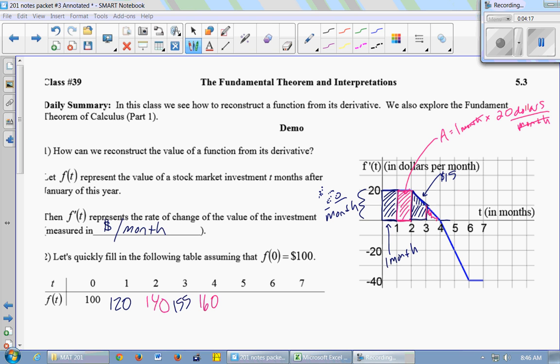Month 4 to month 5, what happened to my investment? Decreased by 10, because this is a triangle, so to find the area of that, it would be 1 by 10 times 1/2, because it's a triangle. So it went down by 10.